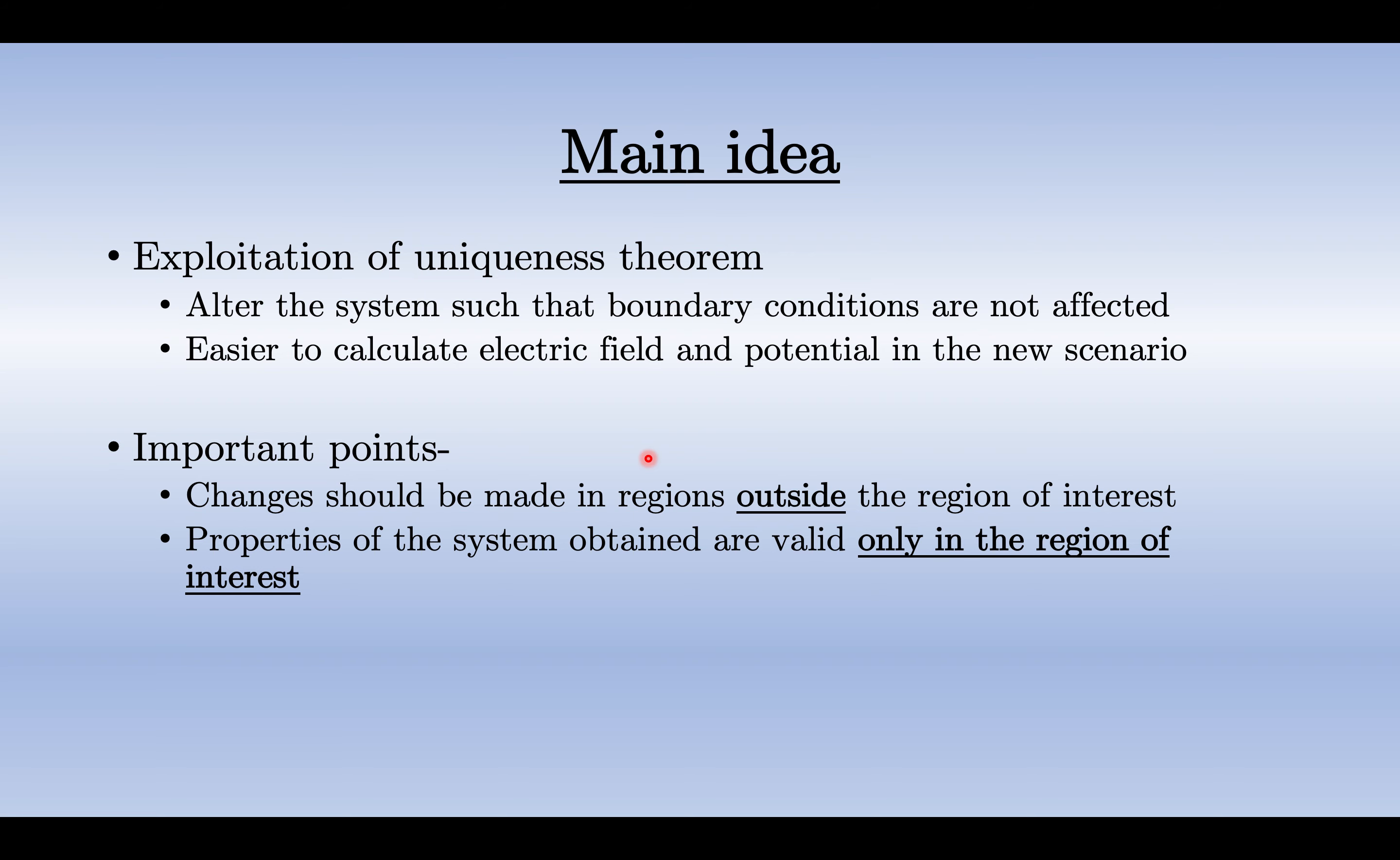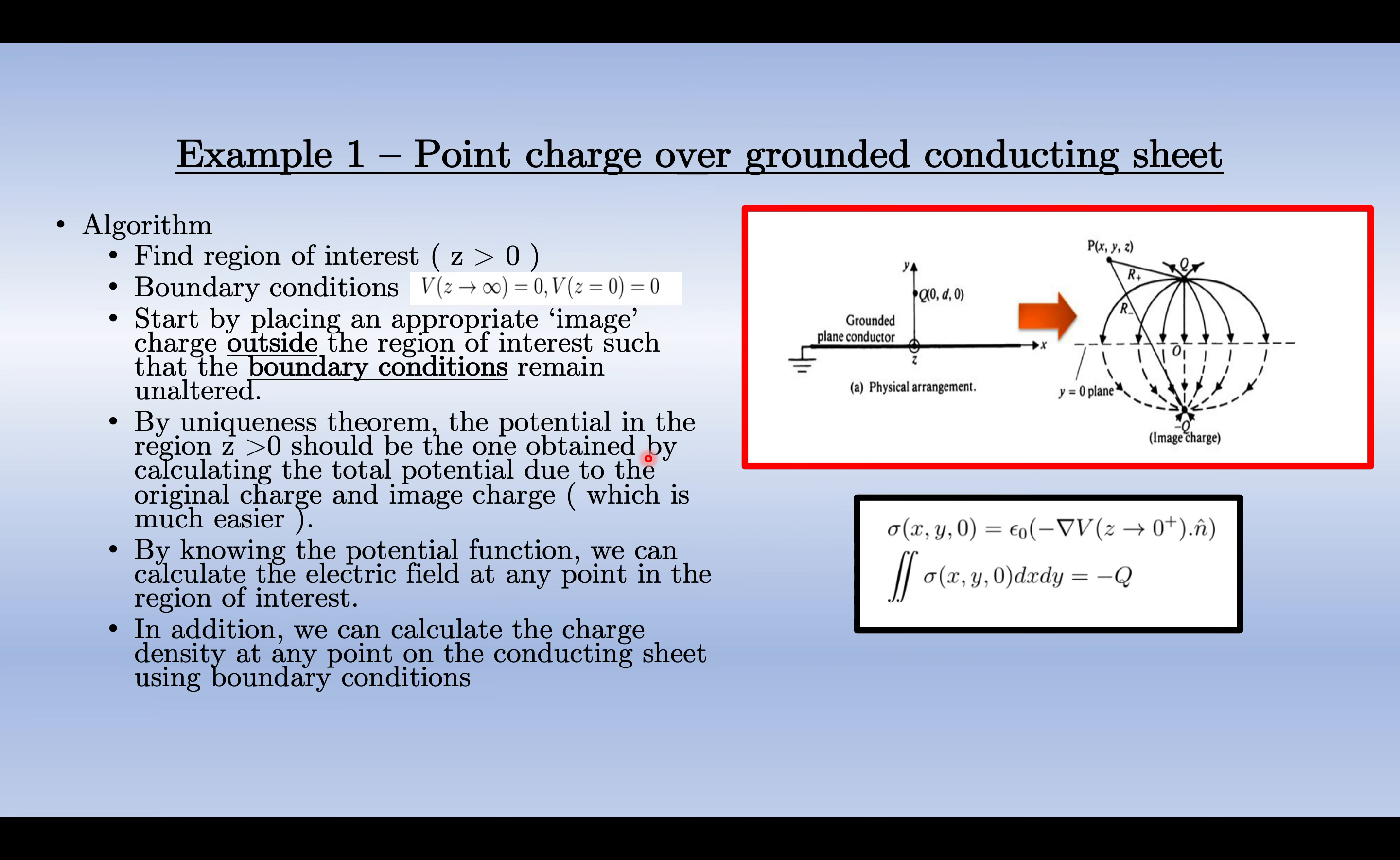So let us look at a few examples to see how it works. The first classic example is the point charge over a grounded conductor. Now if we look at the original problem, it's quite difficult because we don't really know what is the charge distribution on the grounded conductor itself. So we won't really have any feasible method to calculate the potential at any point in, let's say, z > 0.